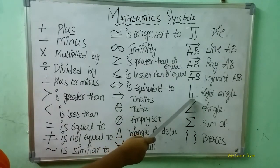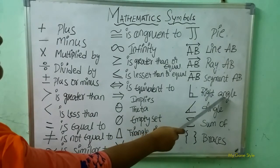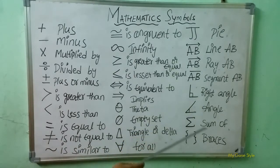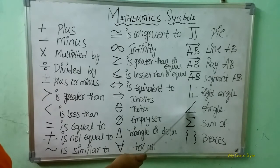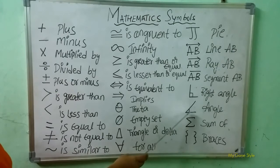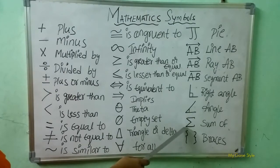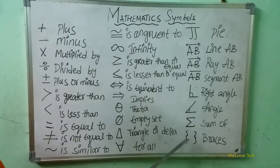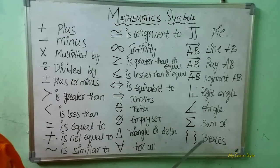Here what is this symbol? This is a right angle symbol. Next, here what is this symbol children? This is an angle symbol. Next, here what is this symbol? This is called sum of symbol. Next, what is this symbol? This is called brace symbol.